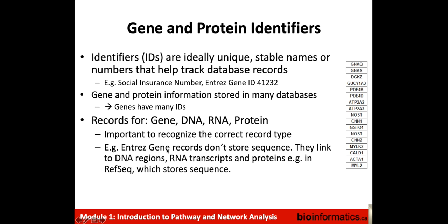It's important to recognize the correct record type or entry type. For instance, the Entrez Gene database doesn't store information about sequence — they link to sequence in other databases where you might have DNA regions, RNA transcripts, or protein sequences, for instance in the RefSeq database which does store sequence. You need to use a standard identifier if you want to unambiguously share or have other systems like pathway analysis methods understand your genes. You can't just use colloquial names for genes, as they just won't be recognized.